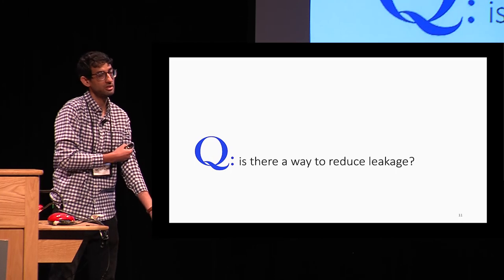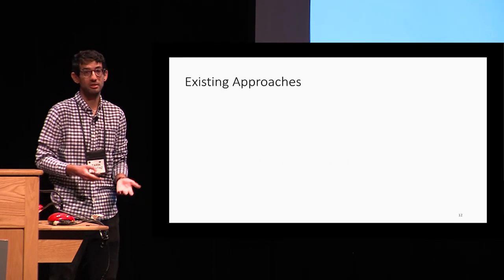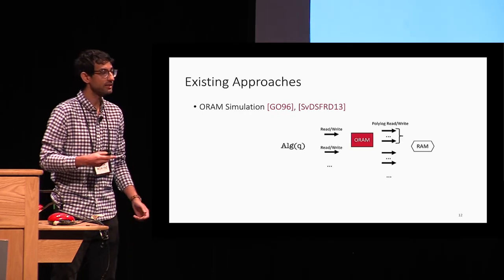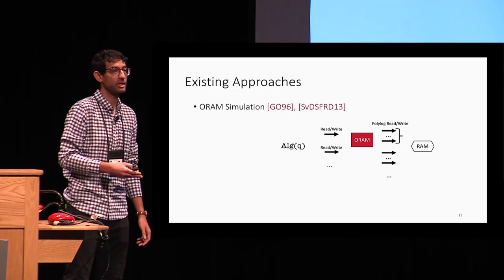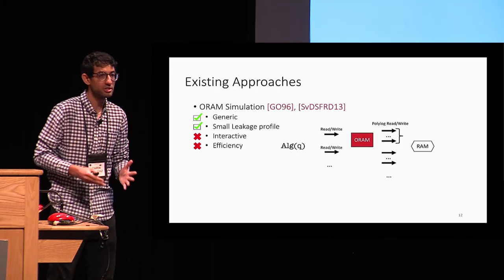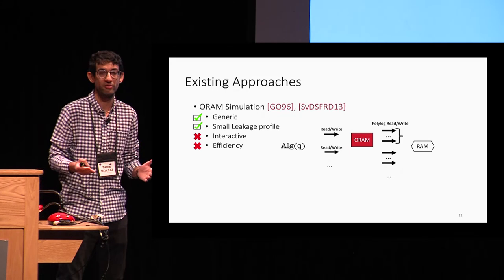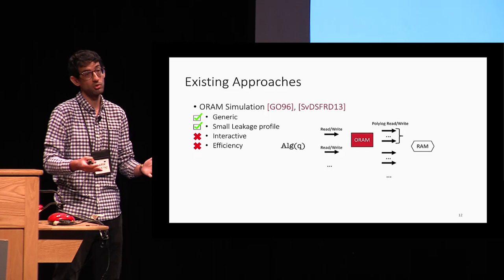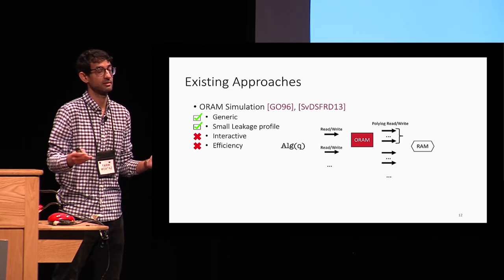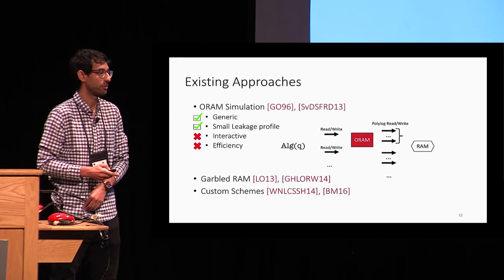A valid question to ask is: are there already ways to reduce leakage? The answer is yes. Oblivious RAM simulation is one of the main ones — a technique that replaces read and write operations with polylogarithmic read and write operations. It has two main advantages: it is generic, applying to any RAM program, and it has a very small leakage profile. However, the downside is it's interactive and doesn't scale to very large datasets. There are also other approaches such as garbled RAM and customized schemes.